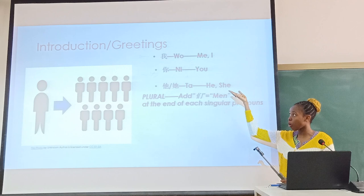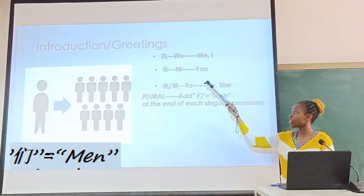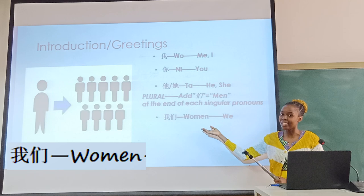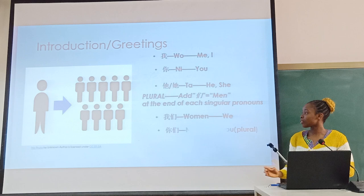If you want to know the plural versions of Wǒ, Nǐ, and Tā, you just add 'men' at the back of each of them. It means the plural version of each. So for instance, Wǒ becomes Wǒmen — not 'women' the English word — Wǒmen, which means 'we'.